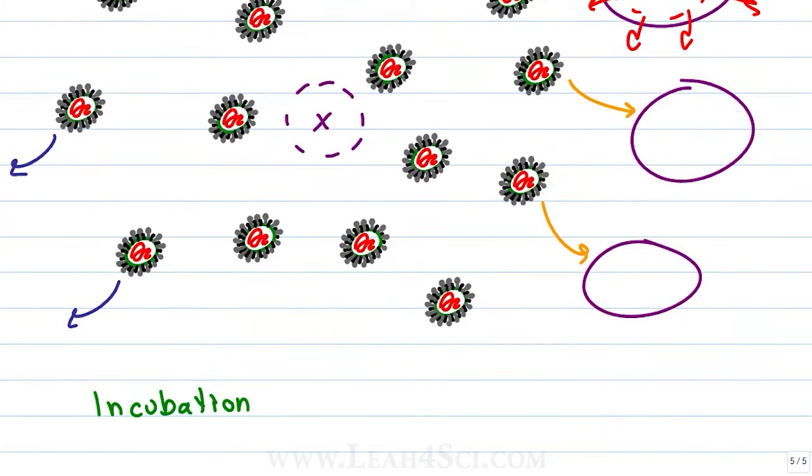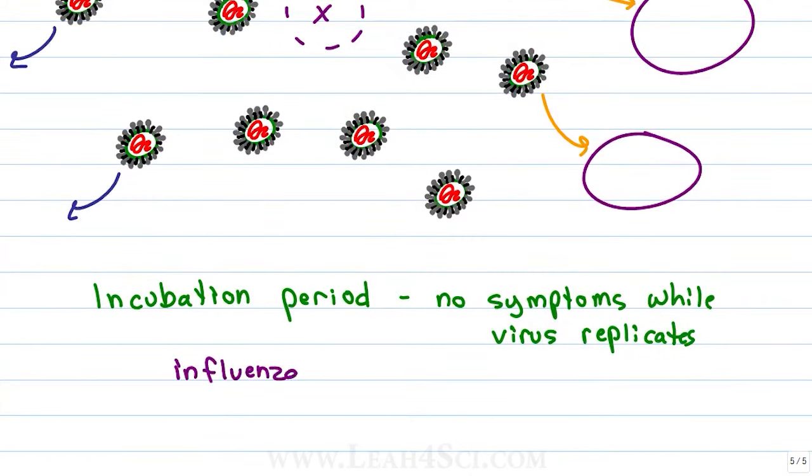The incubation period is the time from when a virus infects an organism until the virus makes so many copies that the organism starts to react. With something like influenza, this could be 1 to 4 days. That means 2 days after catching an influenza viral particle, you still don't know that you're sick but you may have enough viruses, for example in your throat, where if you cough it up and somebody else picks it up, they can get sick before you even know that you're sick.